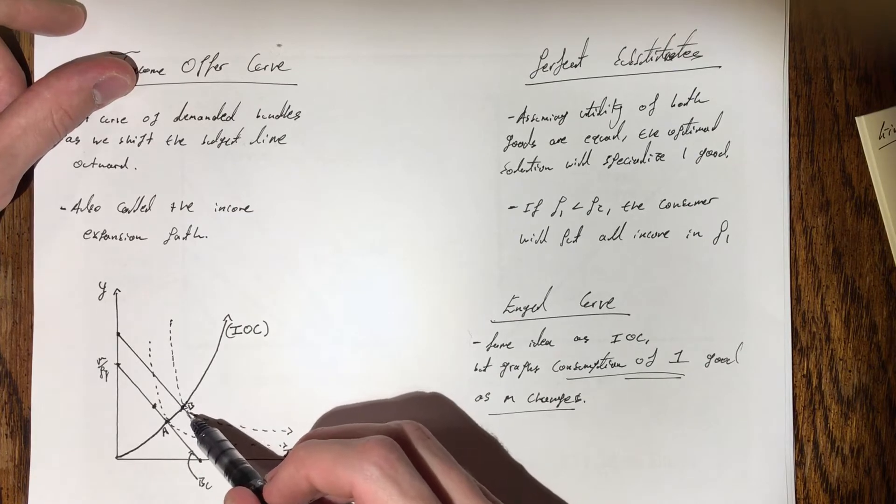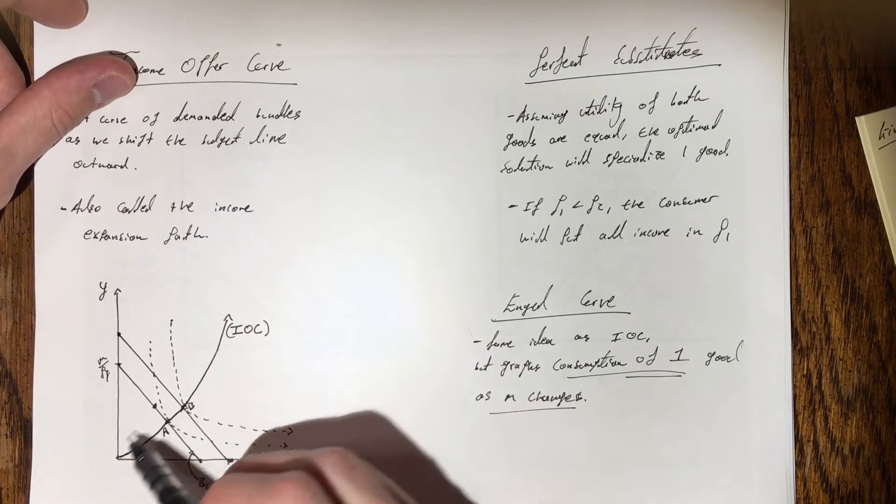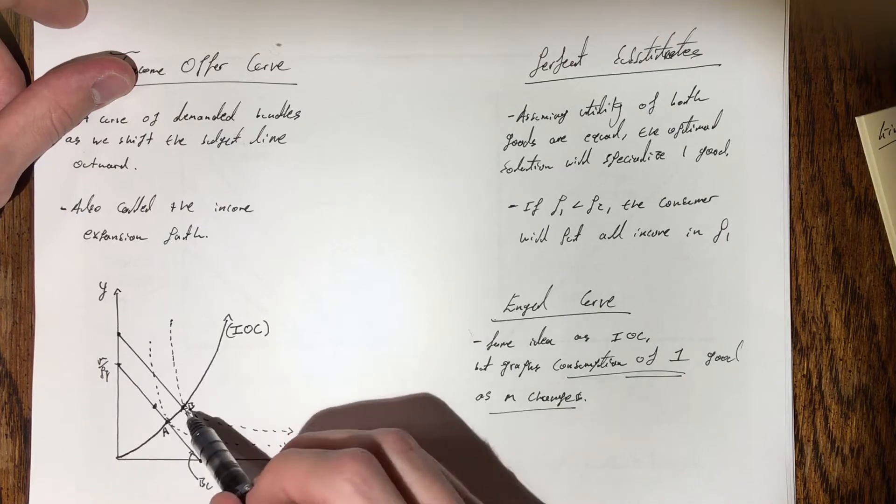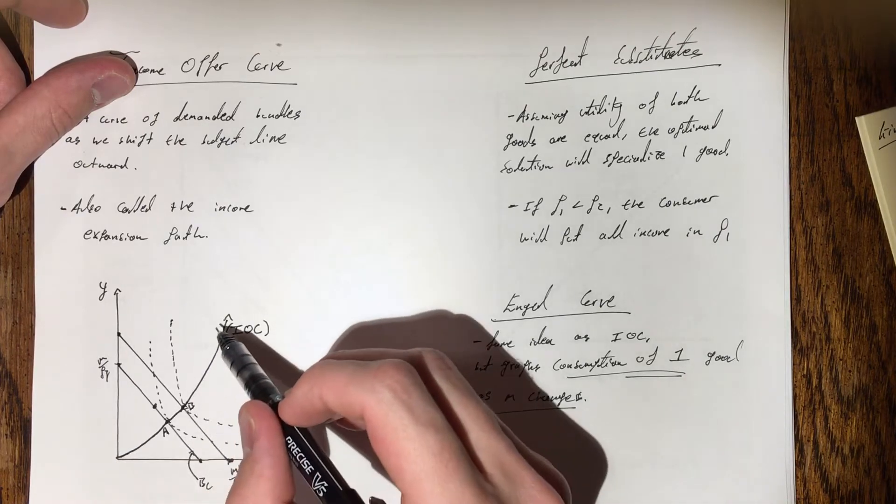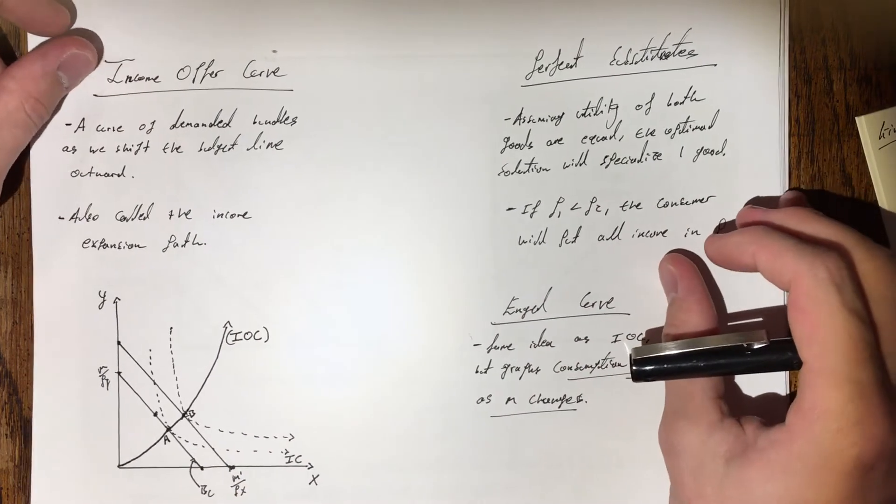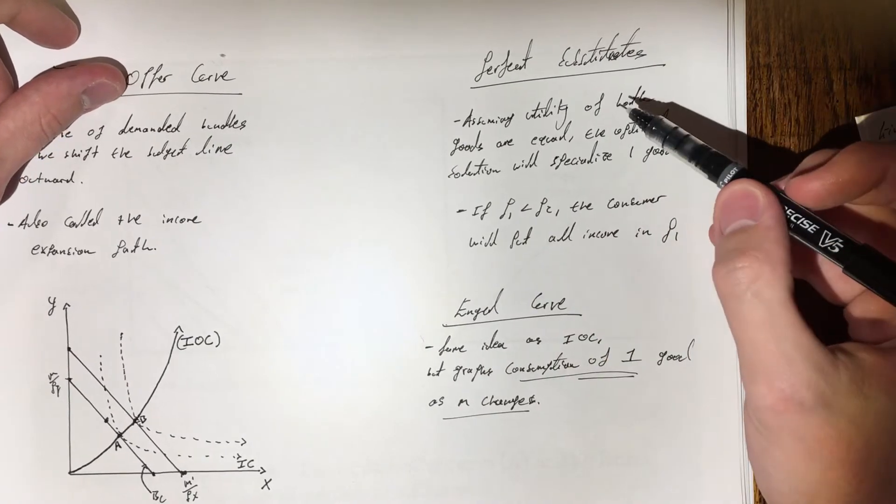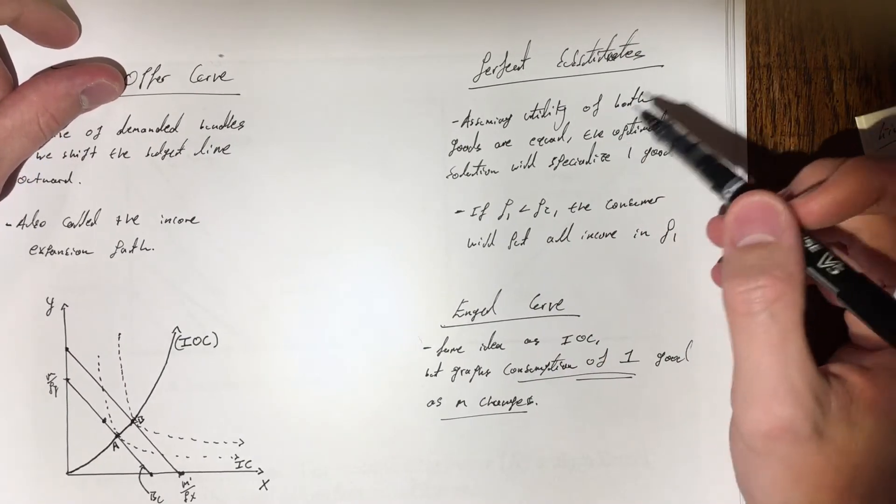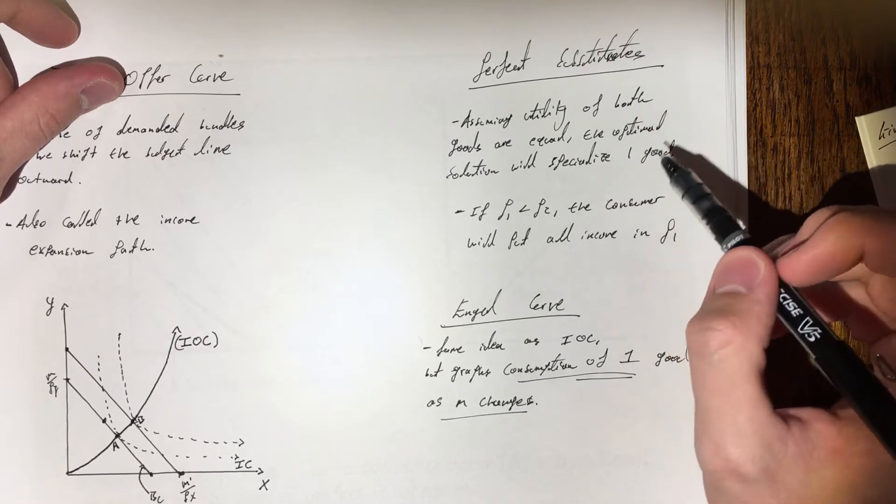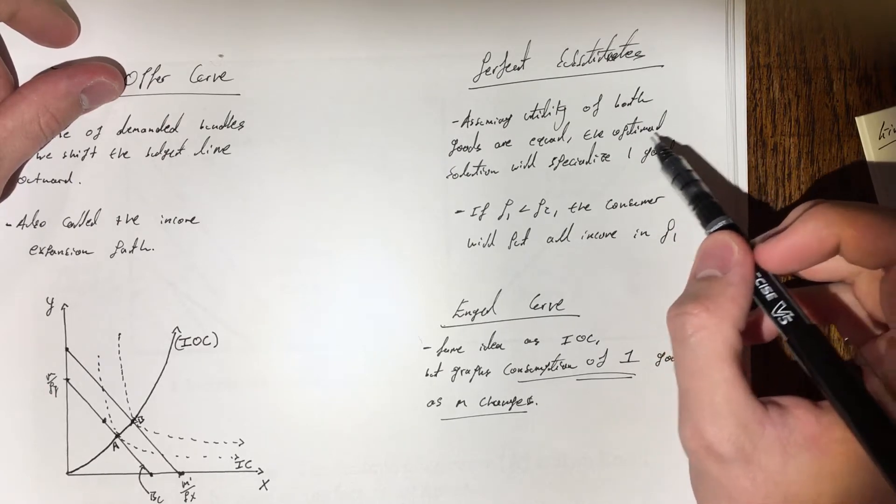And the income offer curve will trace out our optimal bundles as we change our income m. Now a quick overview of perfect substitutes. In this case and in the next graph, they're assuming that the utility of both goods is equal, and so the optimal solution specializes in one good.